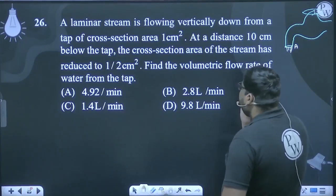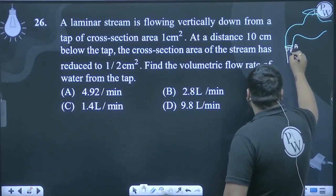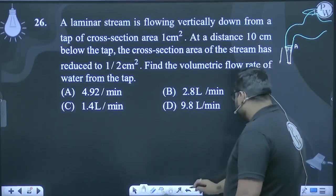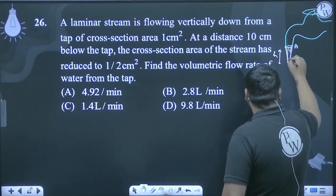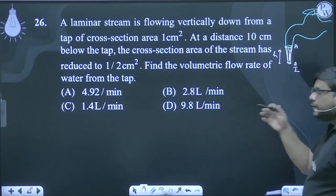At a distance 10 cm below the tap, as the stream goes down, it becomes thinner. At this height below, the stream's area has become A/2. It reduces to half.